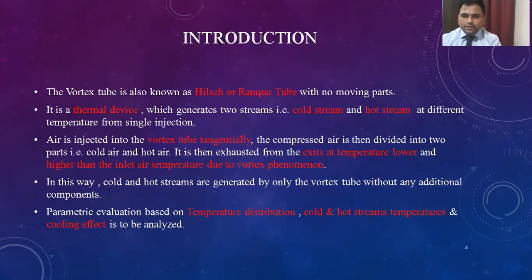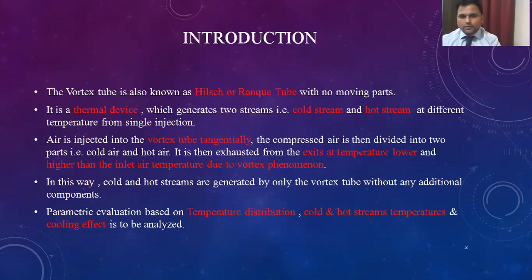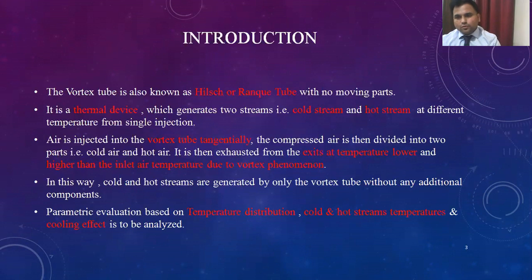Air is injected into the Vortex Tube tangentially, and because of the centrifugal action of the air around the periphery of the Vortex Tube, the air begins to rotate at very high speed. The air enters from the nozzle into the Vortex Tube at very high speed, and the centrifugal action along with the shape of the wall inside causes it to rotate, producing a forced vortex.